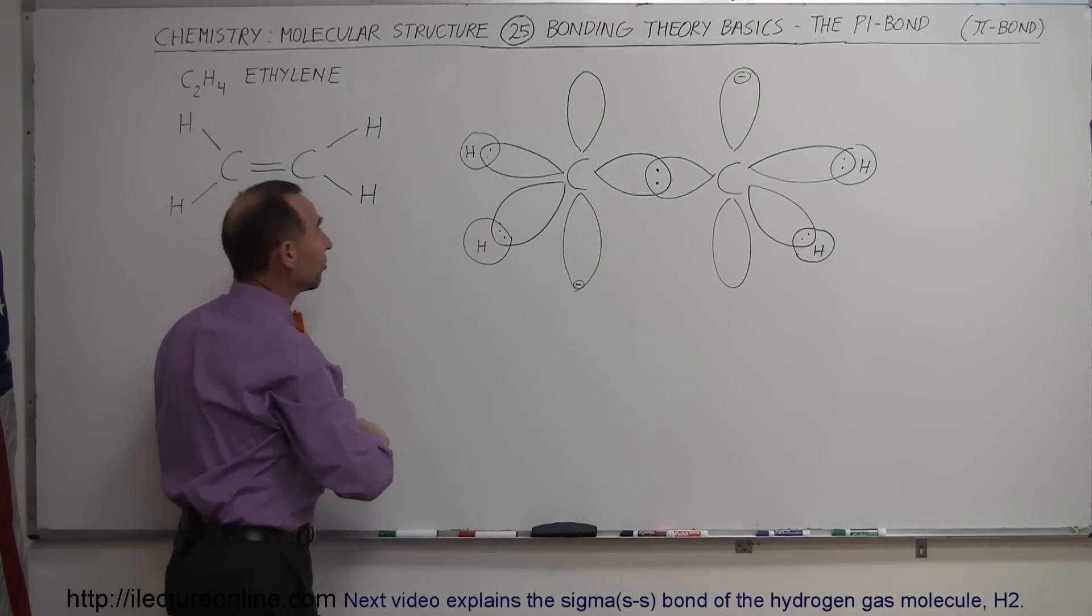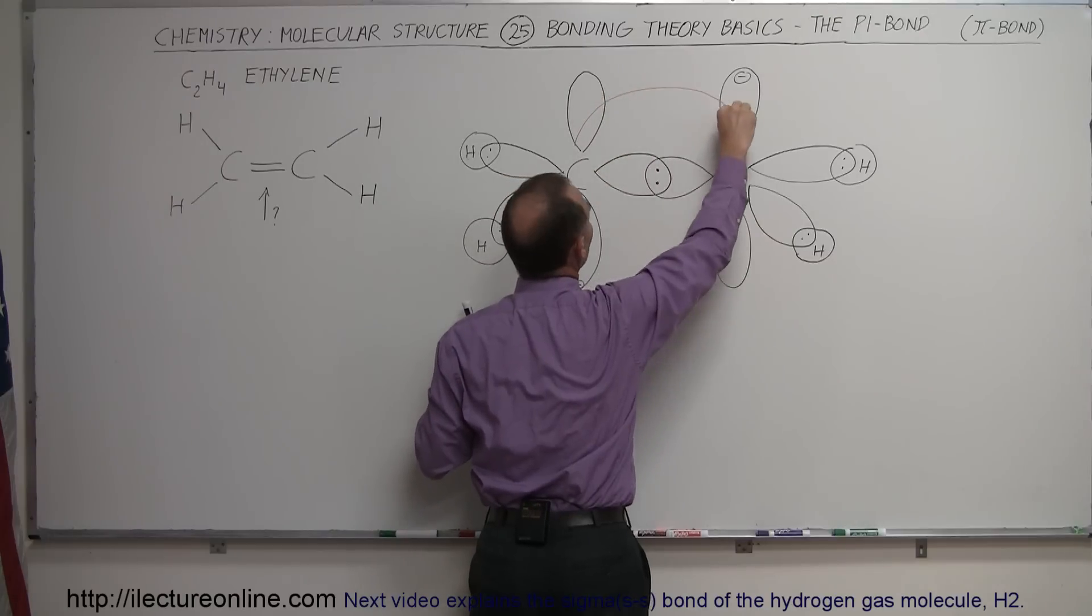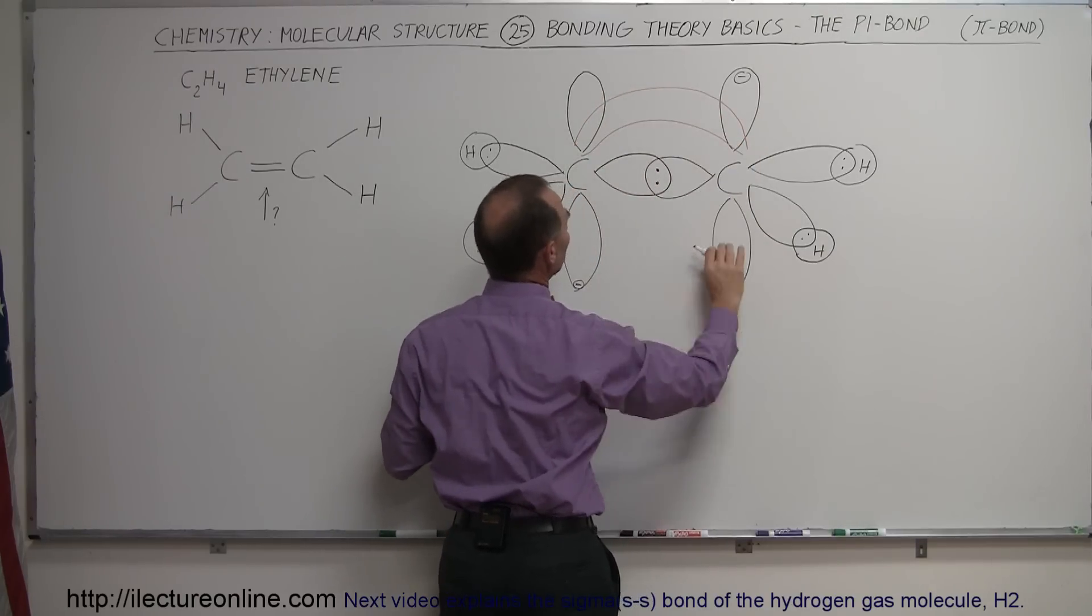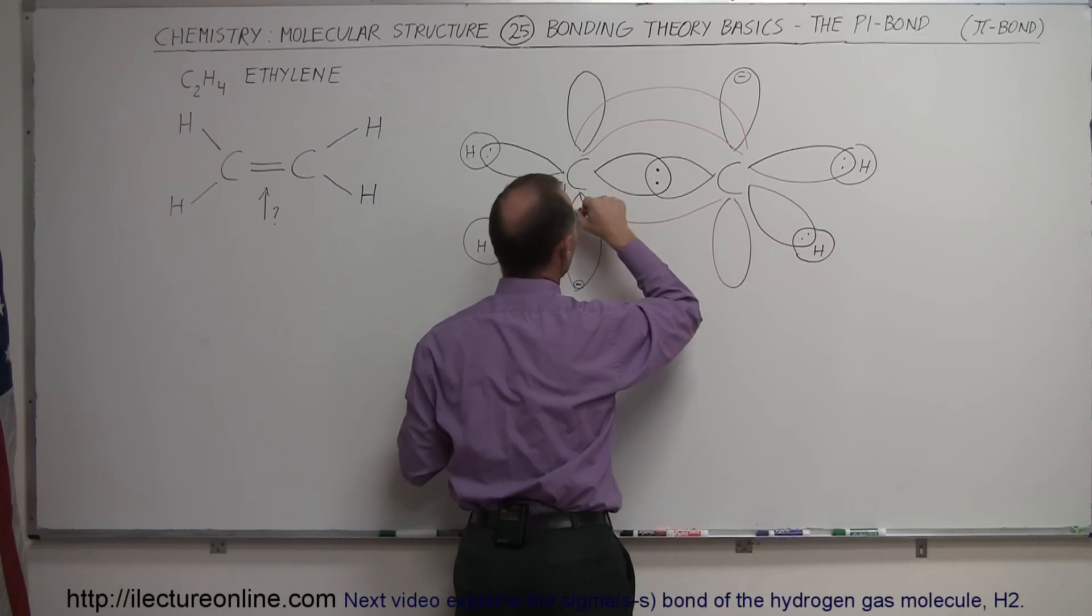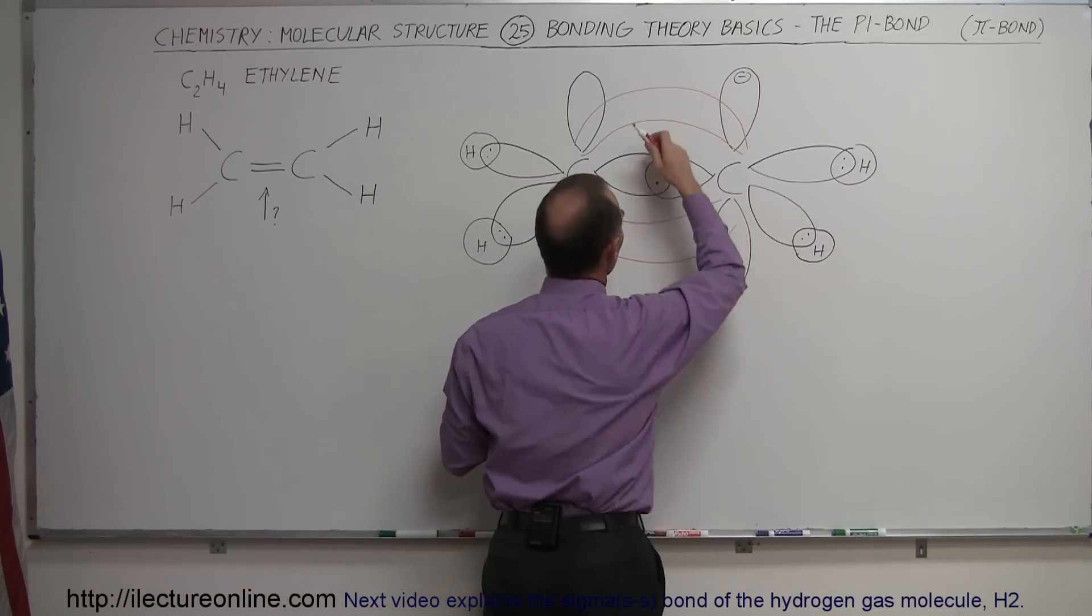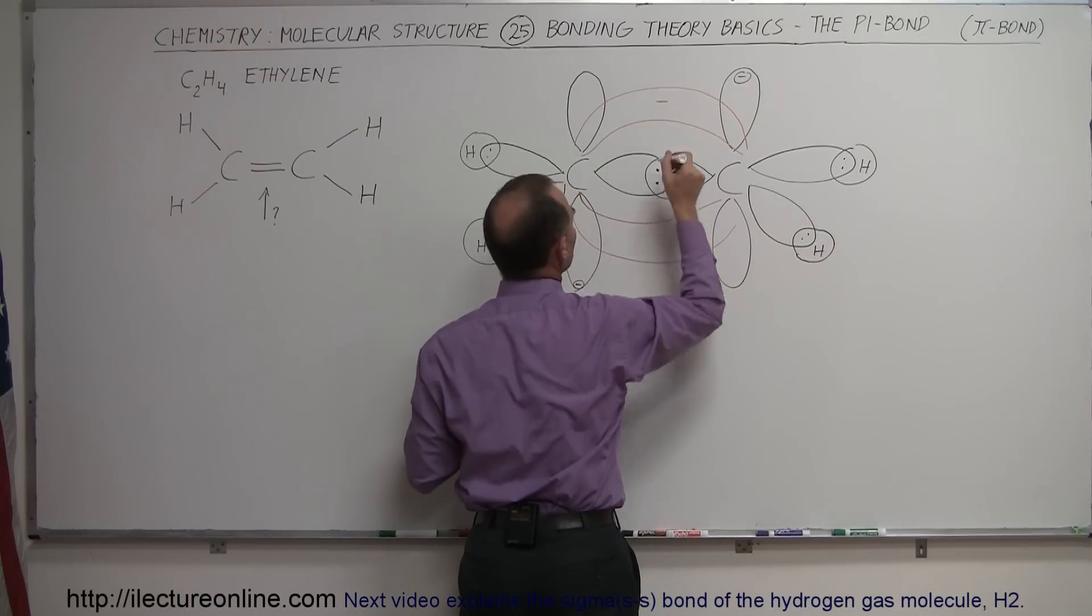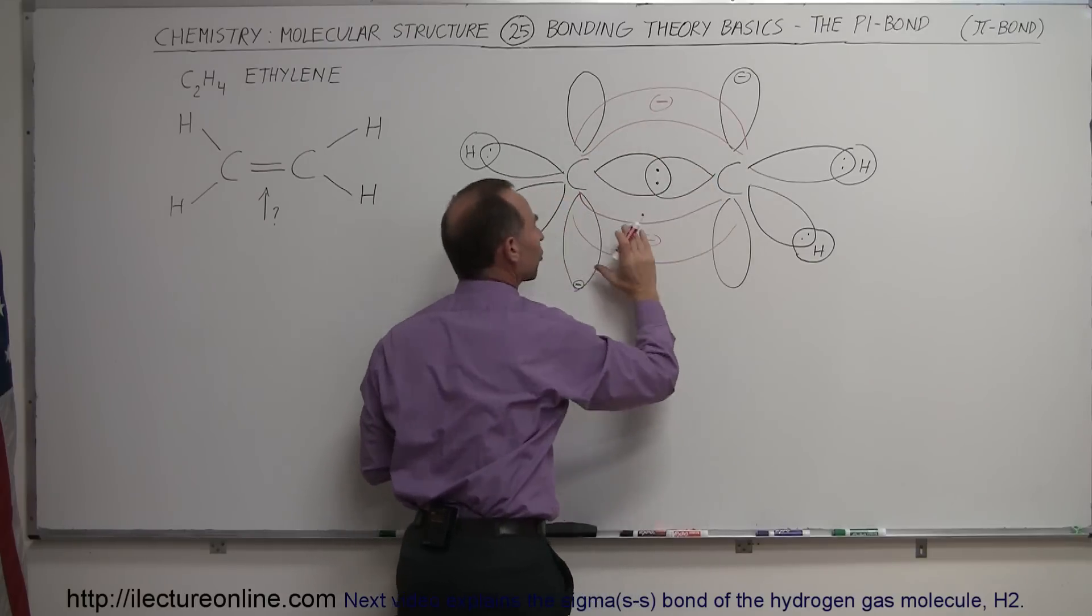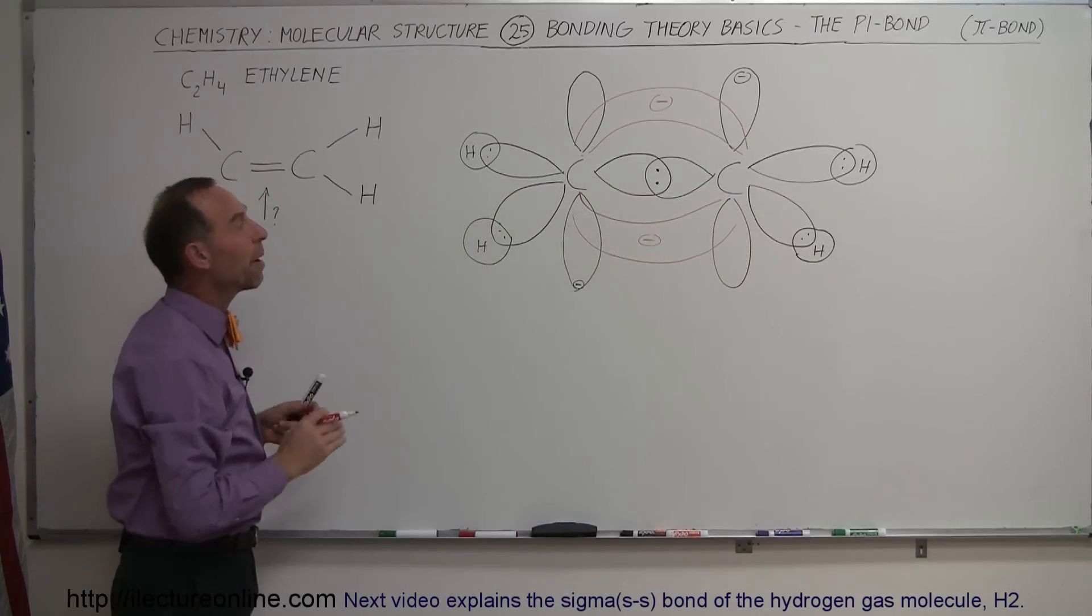So what happens then is that these lobes will bend towards one another, and you form a lobe above the molecule like that. And then these will join together, and they form a lobe below the molecule like that. So they're physically situated above and below so that this electron can freely share in here and freely share in here. And this is basically part of the same structure. So both of these lobes right here are part of the single pi bond.